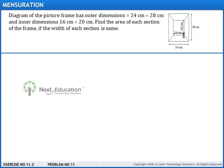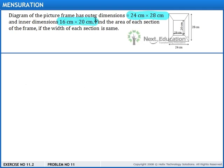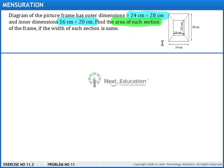A diagram of a picture frame is given with outer dimensions 24 centimeters by 28 centimeters and inner dimensions 16 centimeters by 20 centimeters. We need to find the area of each section of this frame, given that the width of each section is the same. Let's begin the solution.